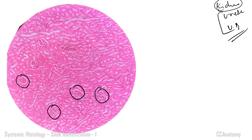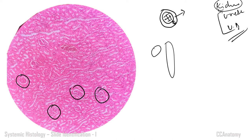The glomeruli appear as circular structures with a central mass surrounded by Bowman's capsule. Between the glomerular tuft and Bowman's capsule, you can make out the urinary space. Wherever the glomerulus is present, you can appreciate the urinary space clearly. Apart from that, you will see multiple cross-sections or longitudinal sections of proximal convoluted tubules (PCT) and distal convoluted tubules (DCT). With the presence of glomeruli along with the urinary space, you can clearly identify the slide of kidney.